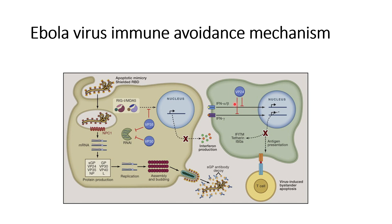VP24 will affect the signaling response generated by IFN — interferon alpha, beta, and gamma — suppressing this signal and thus suppressing the immune response. Additionally, VP24 will affect antigen presentation of the cells to T cells, so T cells will not be able to get activated or receive the antigen of the virus that is currently being produced.